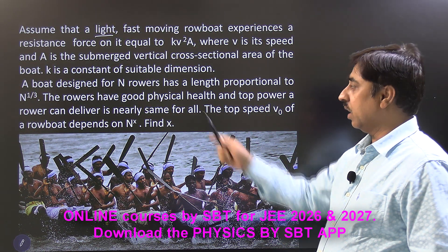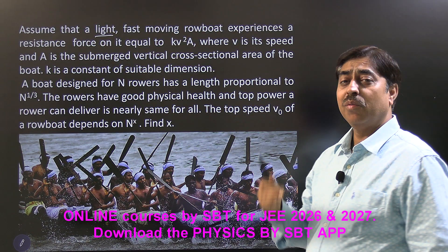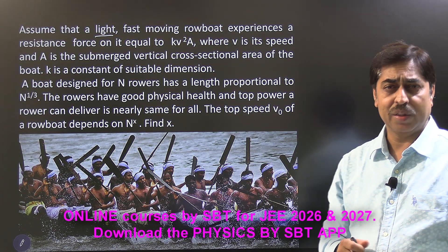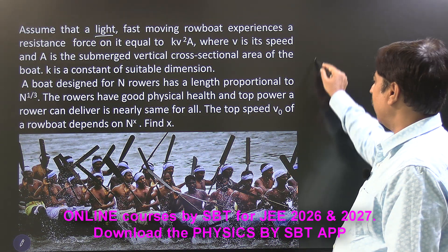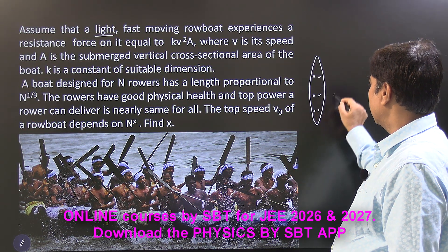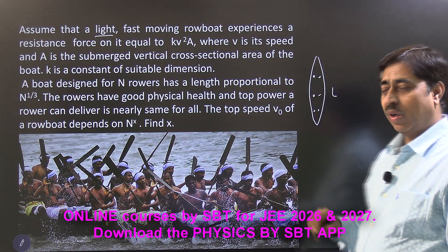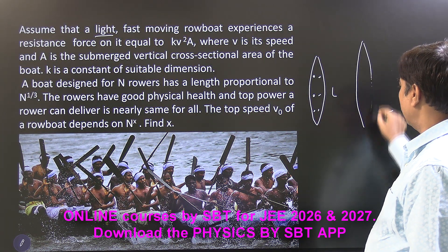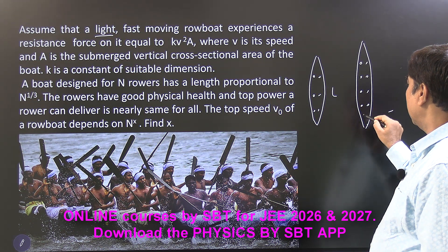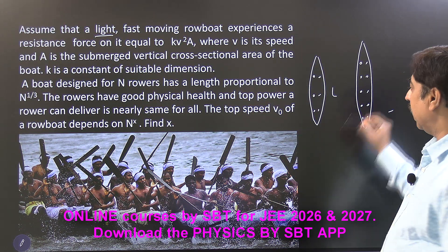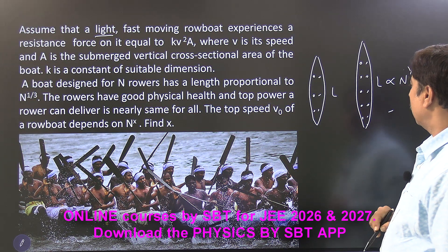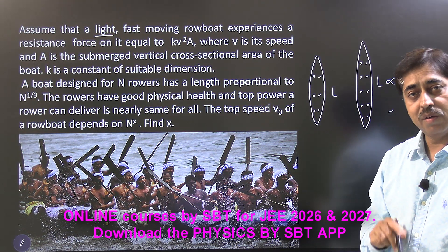The other important statement is: when a boat is designed for n people, its length is proportional to n raised to the power 1/3. So if you have a boat suitable for, say, 6 people with length L, and you design a boat suitable for maybe 10 people, it will have a longer length. The length is proportional to the number of people riding the boat raised to the power 1/3.